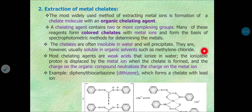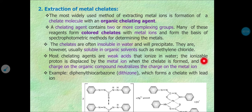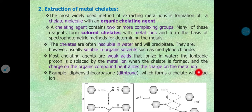Most chelating agents are weak acids that ionize in water. The ionizable proton is displaced by the metal ion when the chelate is formed, and the charge on the organic compound neutralizes the charge on the metal ion.